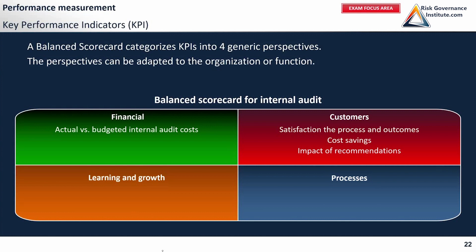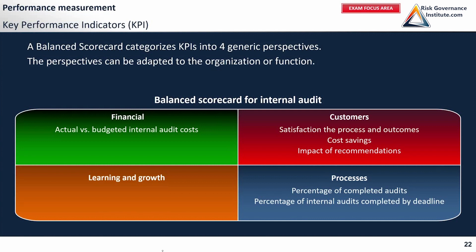Cost savings — the impact of recommendations are harder to measure, but potentially, if you can manage to measure them, then they can be a very good key performance indicator. For processes, it could be the percentage of completed audits, the percentage of internal audits completed by a certain deadline, or the number of non-compliant statements from the standards as evaluated — often by an external quality assessment and improvement program evaluator.